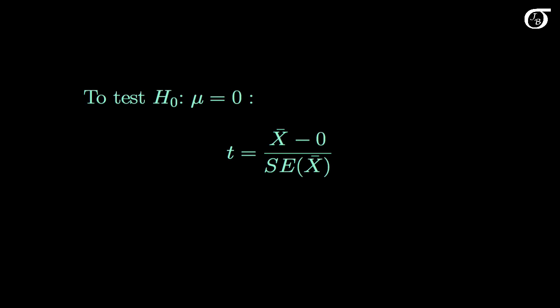Here we would choose the appropriate alternative hypothesis, calculate the value of the test statistic, find the p-value, and reach a conclusion in the usual one-sample ways. I have a video where I work through an example of that.